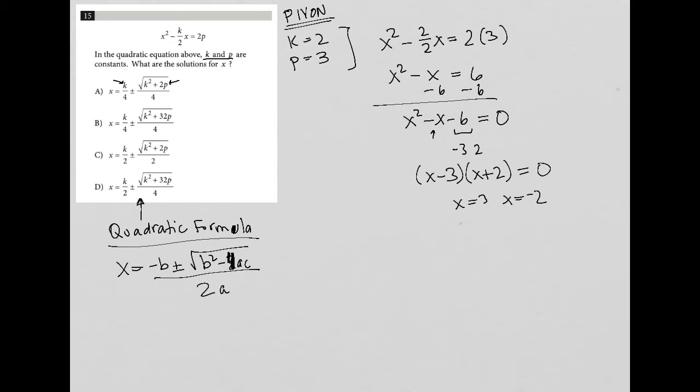So what this tells me is that I didn't need to do really any of this work here. Maybe the subtracting 6 part was actually good. Because I need this to be equal to 0. So x squared minus x minus 6 equals 0.